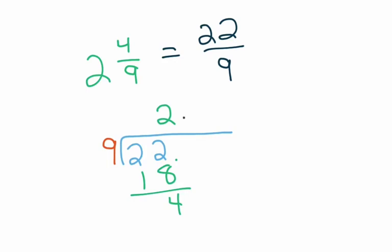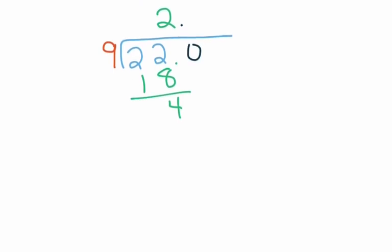So now we put a decimal after the 2. And I'm going to bring this 0 down. 9 goes into 40. 9 goes into 40 four times. 4 times 9 is 36. And we end up with 4 again.